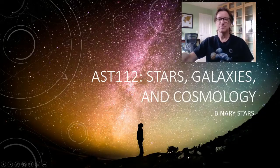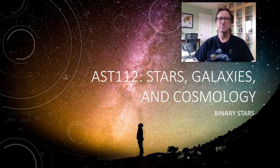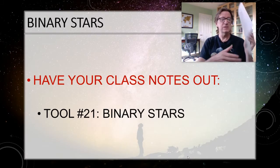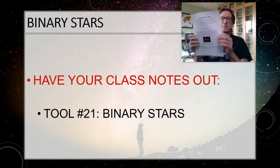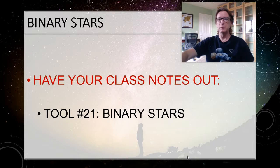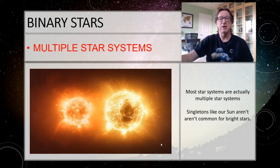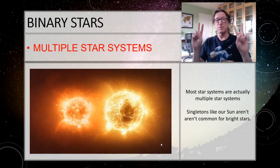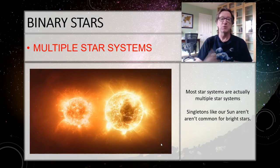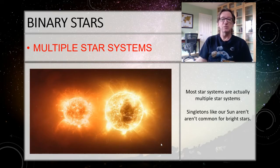Let's get started talking about binary stars. Make sure you have your class notes out. It turns out that most stars in the sky are actually multiple star systems — as many as 85% of the bright stars are multiple stars. Some have four stars, where you've got two binaries orbiting each other. There's even one known with five stars. So singletons like our sun are actually not common among the very bright stars.